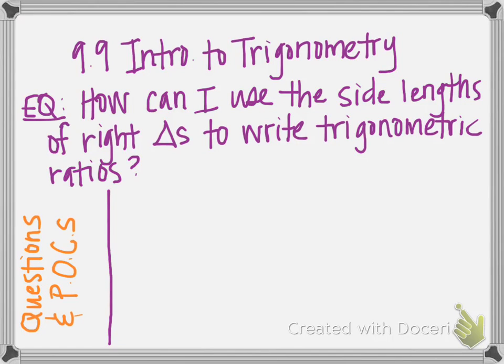Hi students, these notes are going to cover 9-9 and 9-10. We need to understand 9-9 before we can do 9-10. 9-9 is called the Introduction to Trigonometry, also known as trig. Our essential question is: how can I use the side lengths of right triangles to write trigonometric ratios? After we learn how to do this, we will learn how to use that to help us find missing sides of triangles.